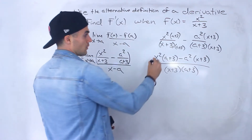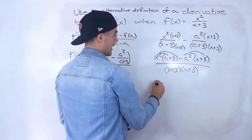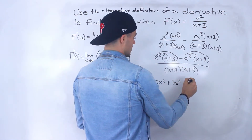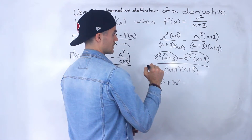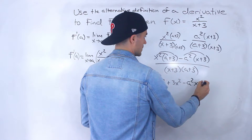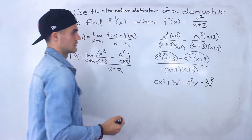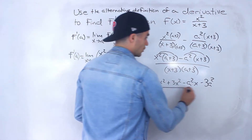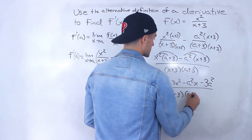Now we distribute. We'll have ax squared plus 3x squared minus a squared x minus 3a squared, all over x plus 3 times a plus 3.